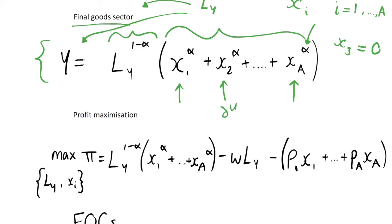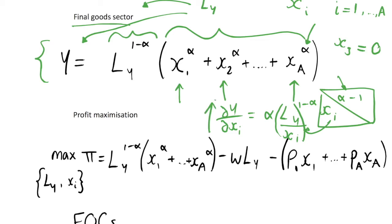So we can find the marginal product by just differentiating the output with respect to a particular good X_i, and we'll get out that this is equal just to this derivative X_i to the alpha minus 1, and so we can see that this alpha minus 1, we could just write this as L_Y to the 1 minus, or L_Y over X_i, all to the 1 minus alpha, and so if X_i goes to 0, then this marginal product is going to tend to infinity.